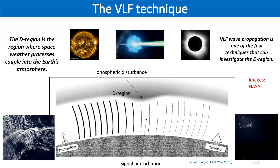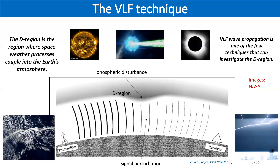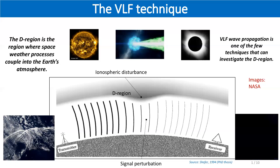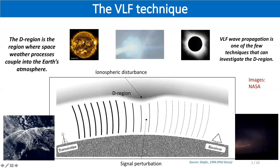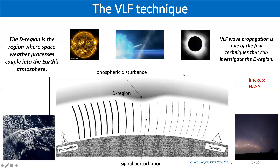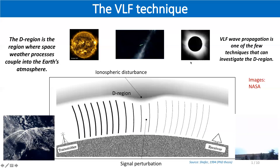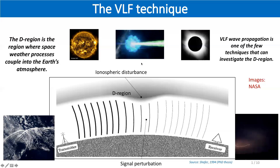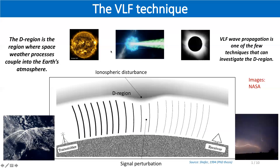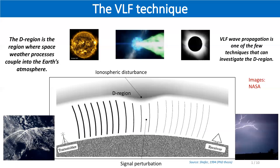They can also have their origin in the solar system, like solar flares and solar eclipses, or even much farther away, like in the case of gamma ray bursts.